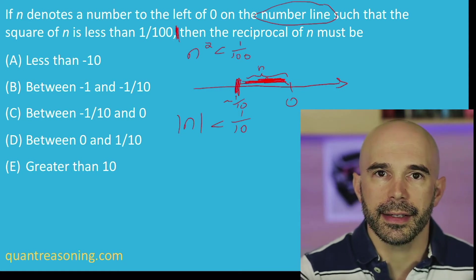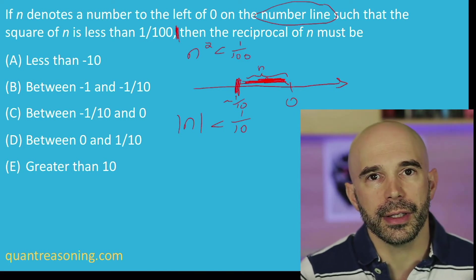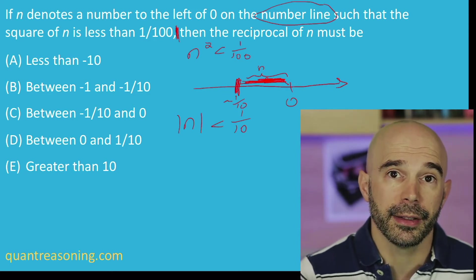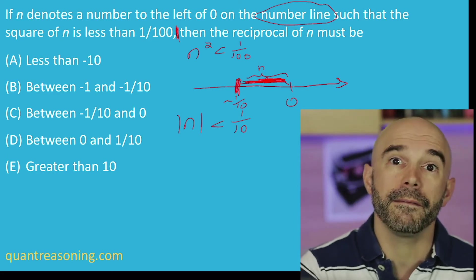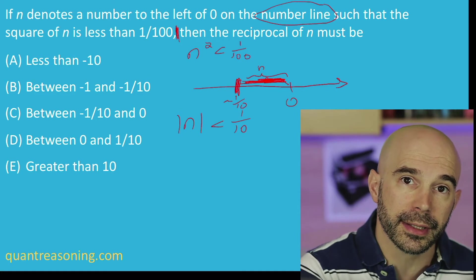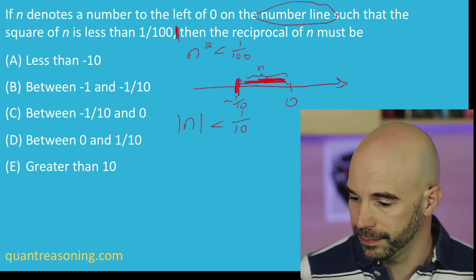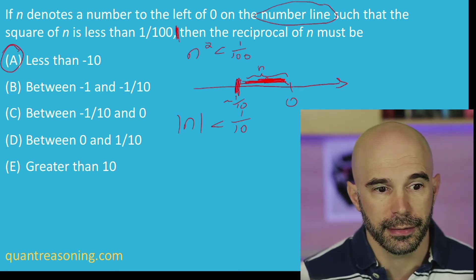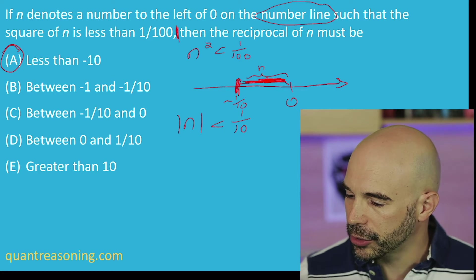So based on that, can we pick out the right answer? Where would the reciprocal of n be if we know that it's closer to zero than negative 1 tenth? The reciprocal of negative 1 tenth is negative 10. And we know that the closer we are to zero, the farther away from zero would be the reciprocal. Is that enough to pick out the right answer? Less than minus 10 — that's right. Now, let's say that last part was hard for you. Is there some trick you could use to make it easier? And the answer is yes, there is a trick.